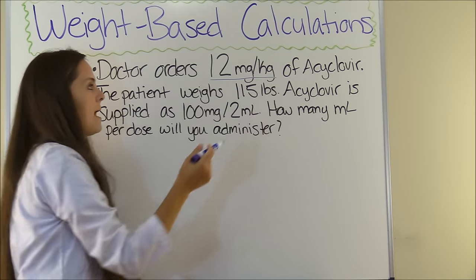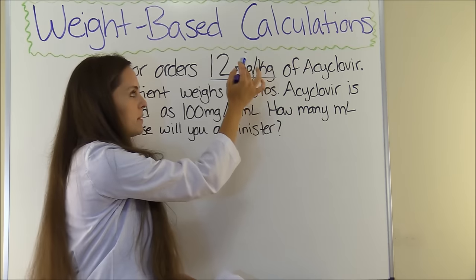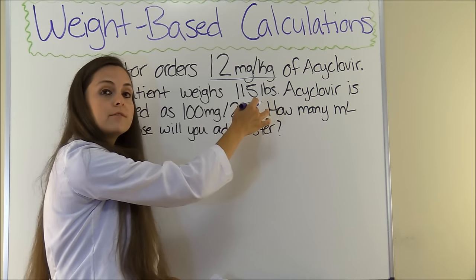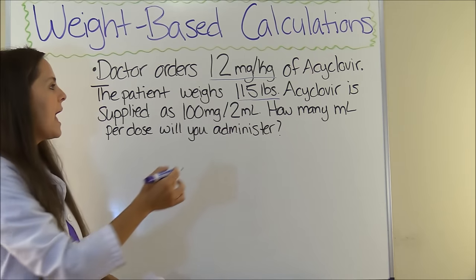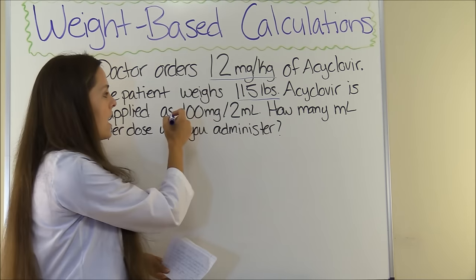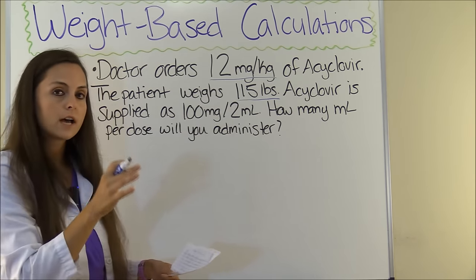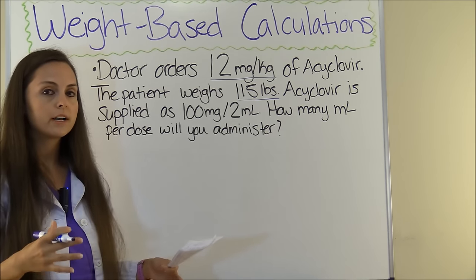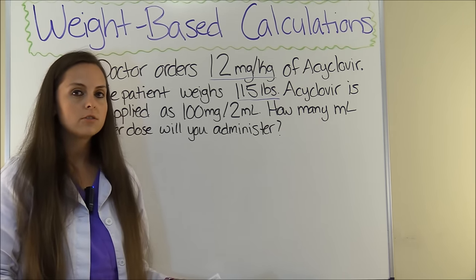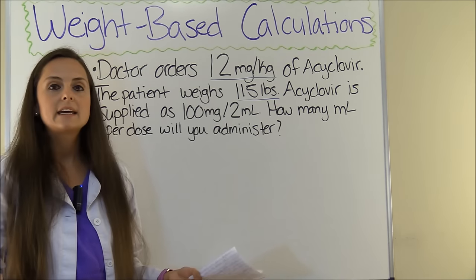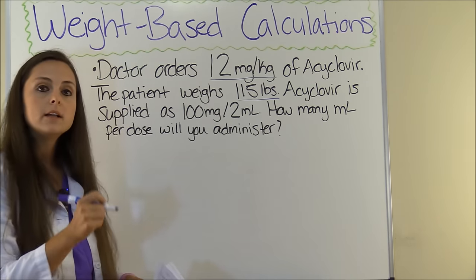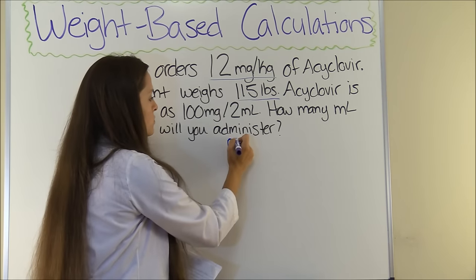This is very important — we're going to underline that. For every kilogram that the patient weighs, we're going to give 12 milligrams of that drug. The patient weighs 115 pounds, so let's underline that too. We have acyclovir supplied as 100 milligrams per 2 milliliters, so we have some converting to do. Whenever I work dosage and calculation problems, I like to use dimensional analysis. Our goal is milliliters per dose.